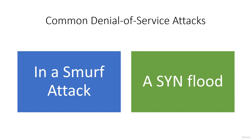In this type of DoS attack, the attacker sends several requests to the target server, overloading it with traffic. These service requests are illegitimate and have fabricated return addresses, which mislead the server when it tries to authenticate the request.